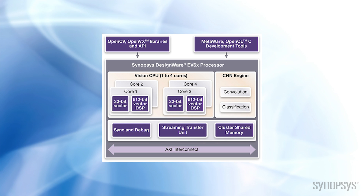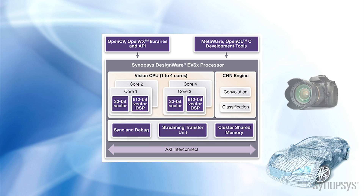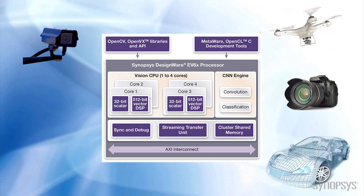Embedded vision processors like Synopsys DesignWare EV6X embedded vision processors support the unique performance needs of vision-enabled applications within low power budgets. In addition, the EV6X processors are available with a programmable CNN engine that works in parallel with its vision CPUs, making the EV6X particularly efficient for applications such as autonomous vehicles and drones where multiple cameras and vision algorithms are used concurrently.